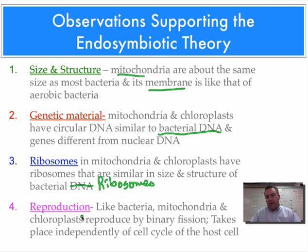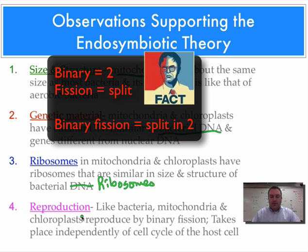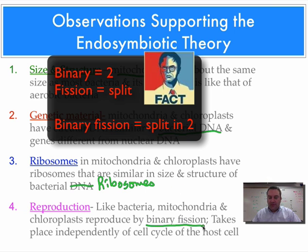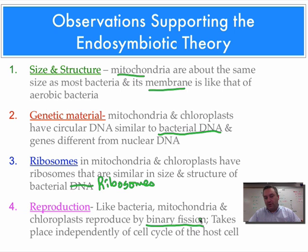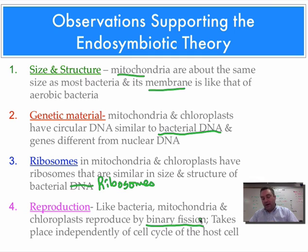Finally, reproduction. Bacterial cells divide through a process called binary fission — well, mitochondria and chloroplasts also reproduce by binary fission, and this takes place independently of the cell cycle for the rest of the cell. For example, the nucleus of a eukaryotic cell goes through mitosis — prophase, metaphase, anaphase, and telophase — and even as the cell is doing that, the mitochondria may simultaneously be going through their own binary fission.